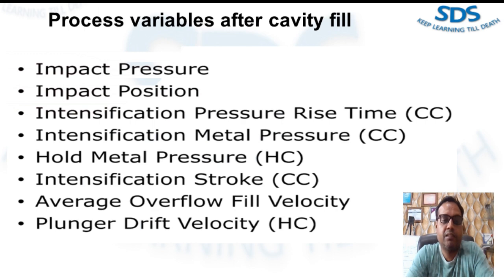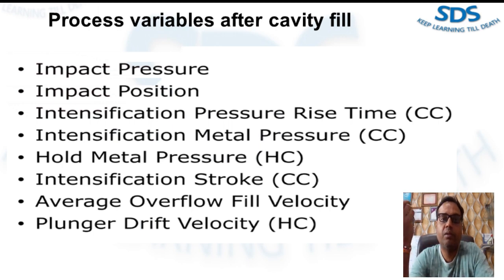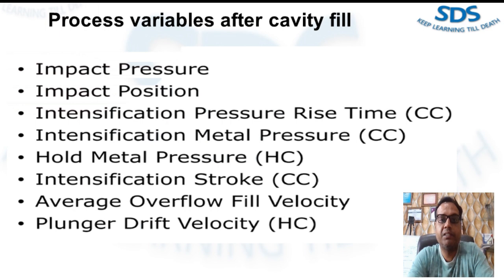Another variable is hold metal pressure, which is found only in hot chamber machines. Hold metal pressure is the average metal pressure held after the impact position. Hold metal pressure can affect shrinkage porosity. Small plunger diameter causes larger hold metal pressure, while large plungers cause lower hold metal pressure.